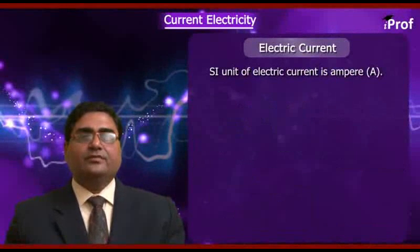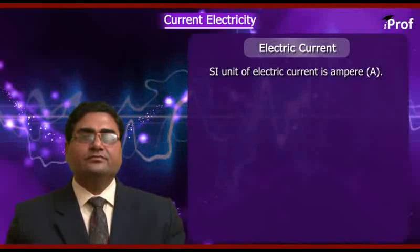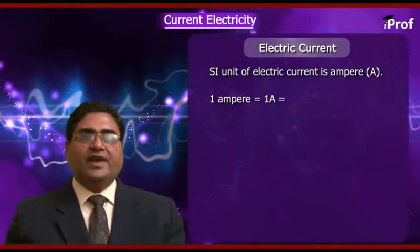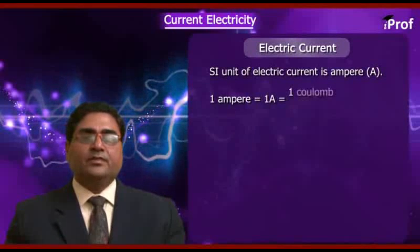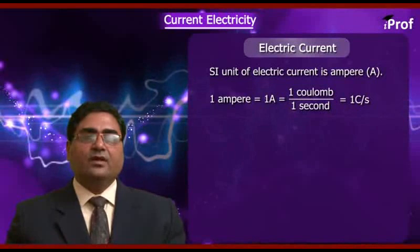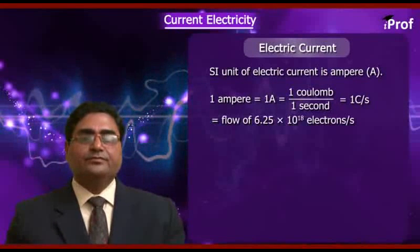The SI unit of electric current is ampere, denoted by A. One ampere equals 1 coulomb per second, which corresponds to the flow of 6.25 into 10 to the power 18 electrons.